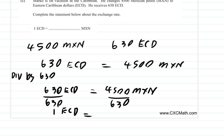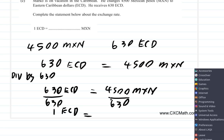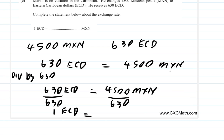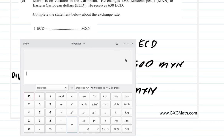When it divides 4,500 by 630, what do you get? Let's get our calculator. 4,500 over 630.